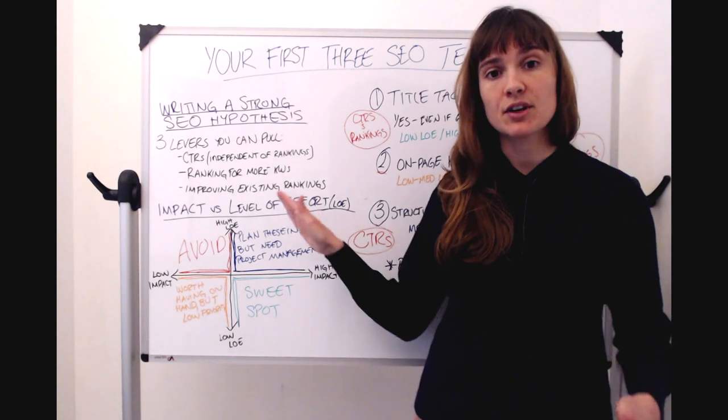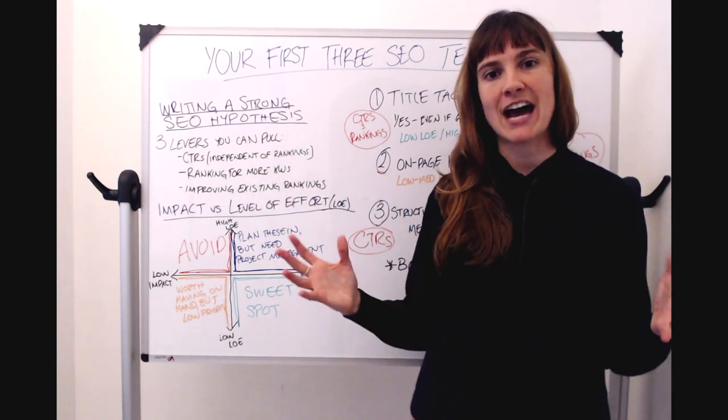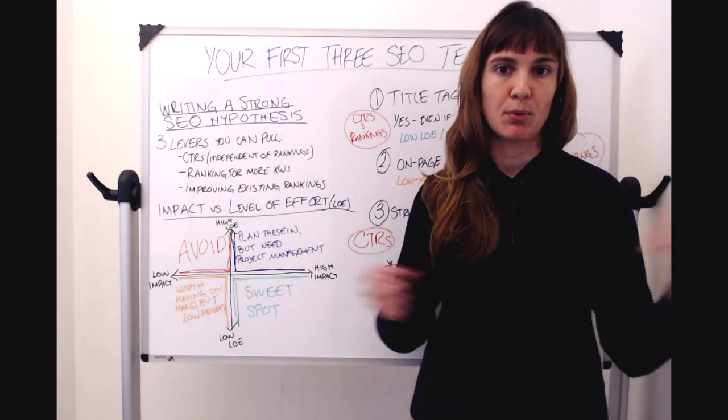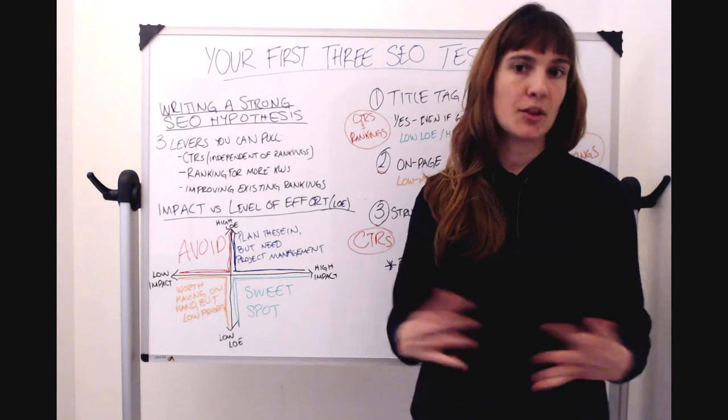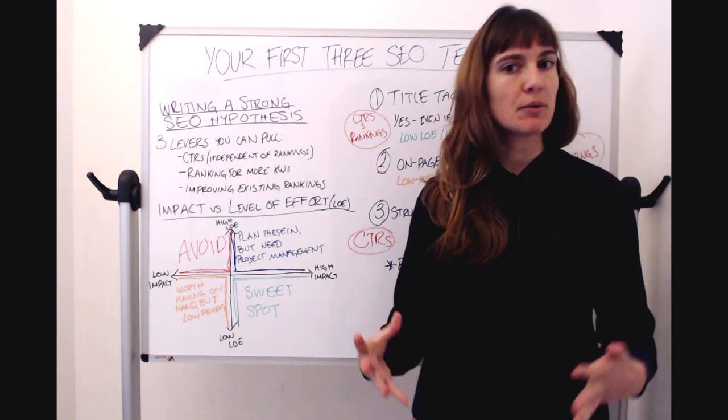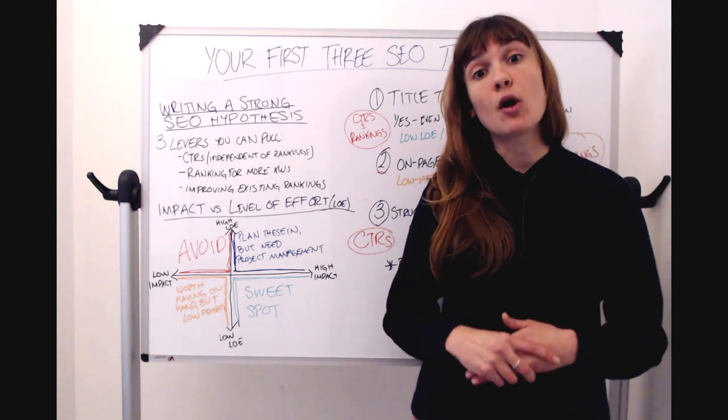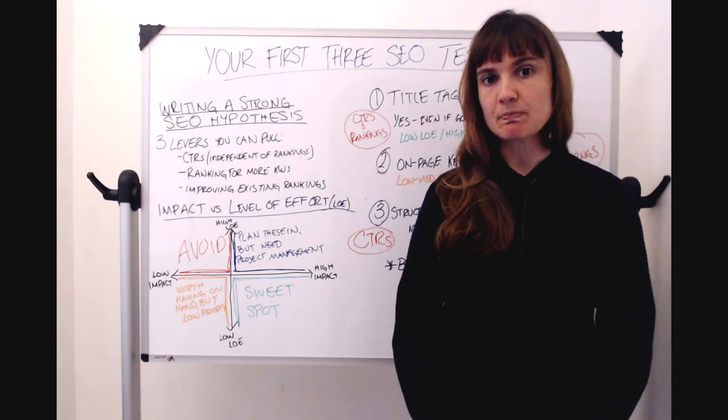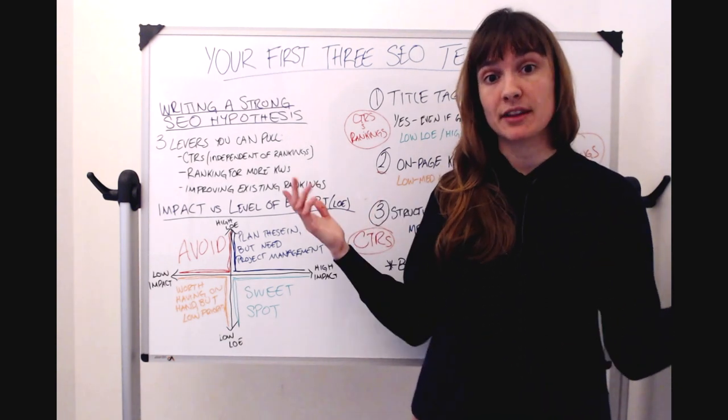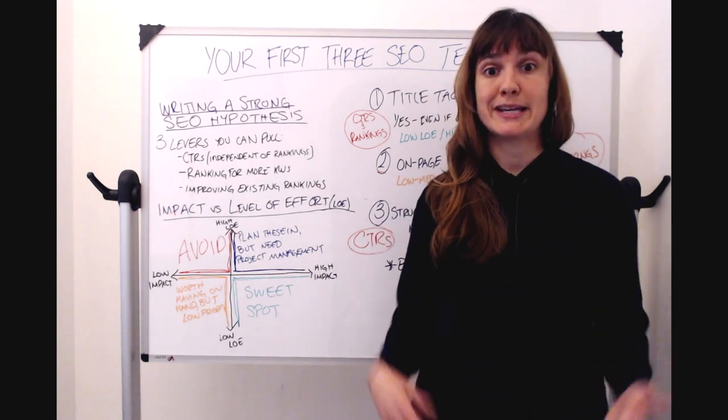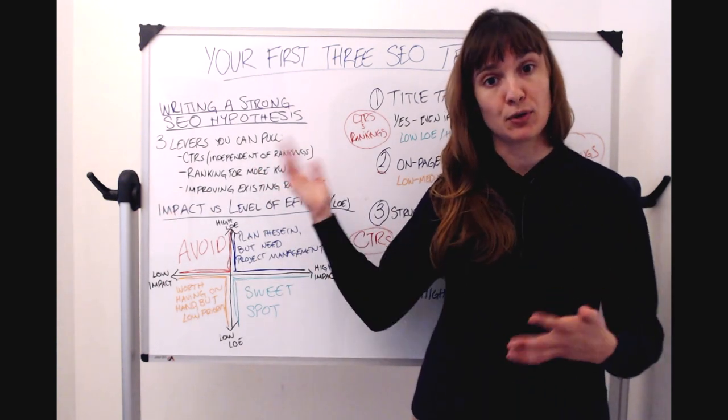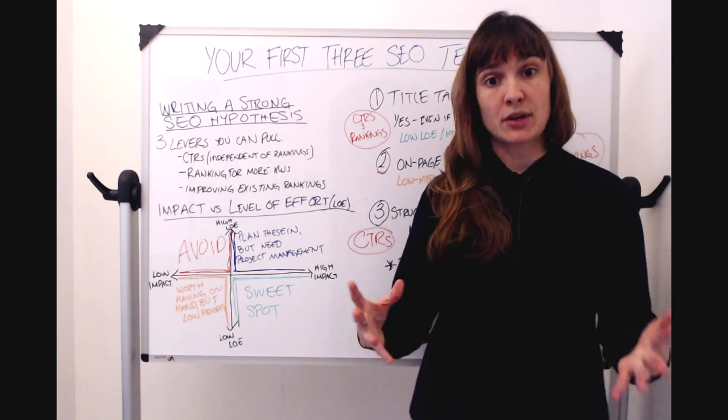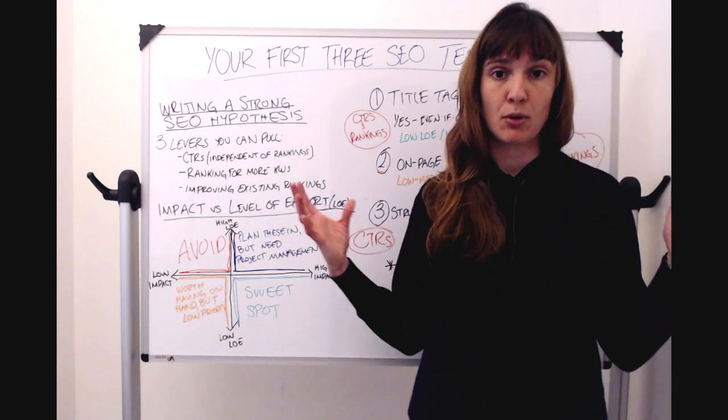So the three core levers, we need to be pulling at least one of them to have a valid SEO hypothesis. If you come up with a test idea and you can't actually find a way that it clearly pulls one of these core levers, that is probably not a true SEO hypothesis and you probably shouldn't run it. You might want to consider running it as a CRO test instead, but it shouldn't be your SEO testing program. Now we can pull more than one of these levers, think of something like title tags, that improves our rankings and it changes our appearance in the SERP so that improves our click-through rates, maybe independent rankings as well. But that's okay, we just want to capture that in our hypothesis if we're going to pull more than one lever.